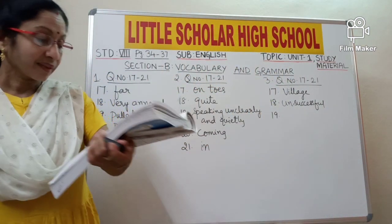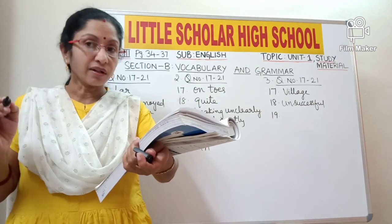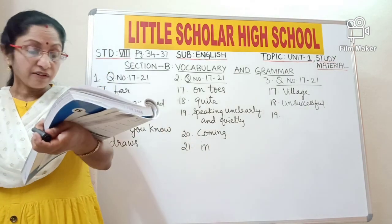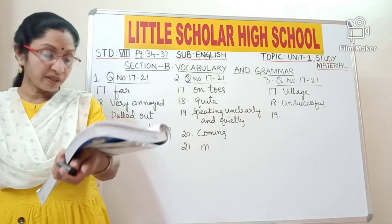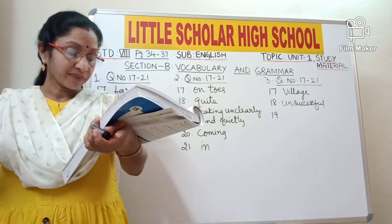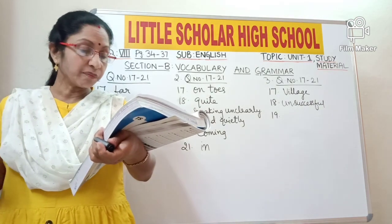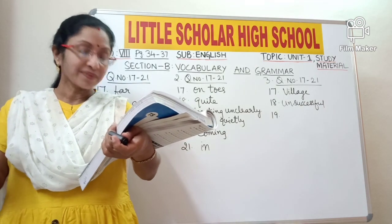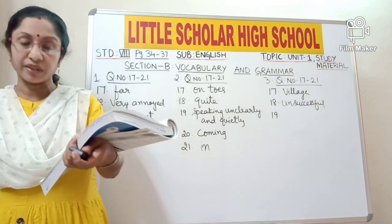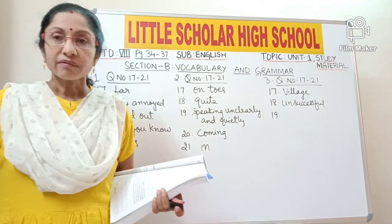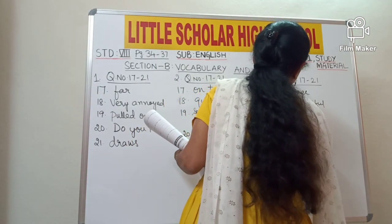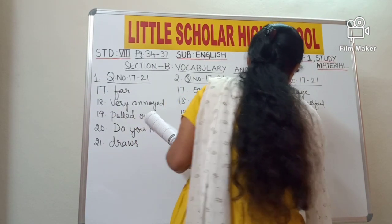Question number 19: 'Get off' is underlined. 'Get' is a verb and 'off' is a preposition — a combination of a verb and a preposition is called a phrasal verb, and it has its own meaning. The correct phrasal verb to replace 'get off' here is 'get up', meaning to get up from that place.